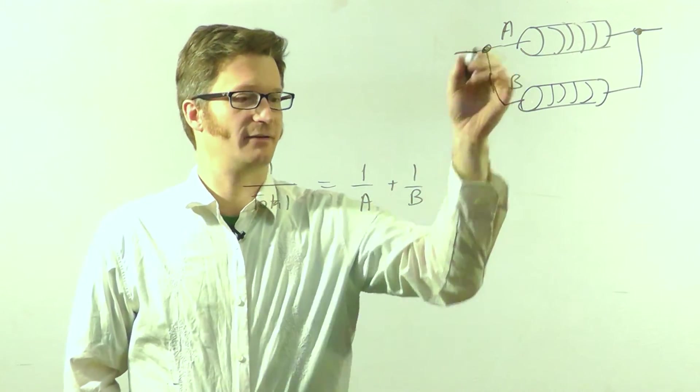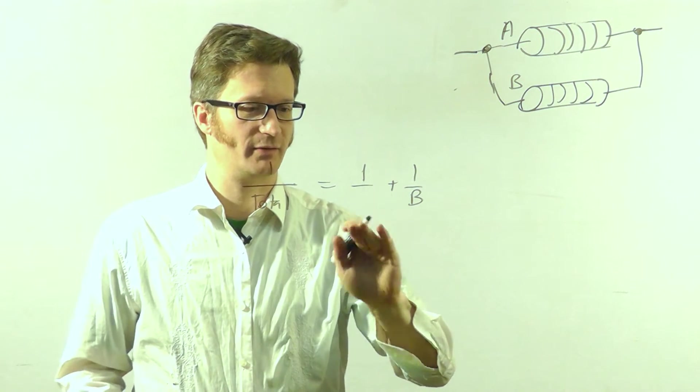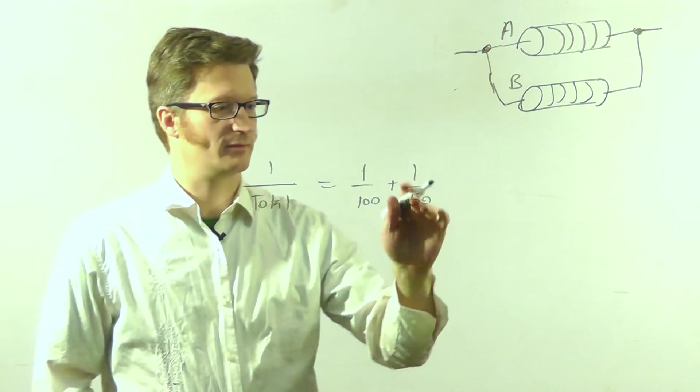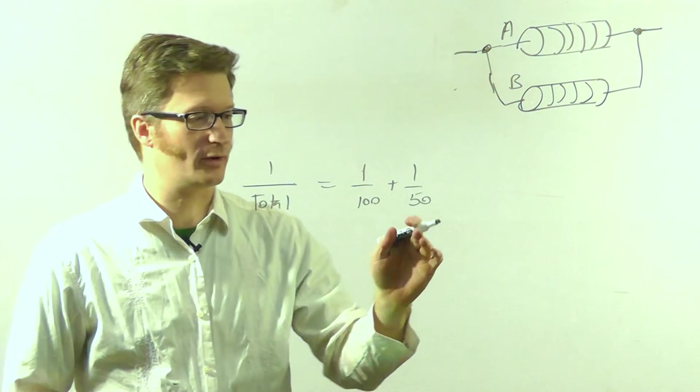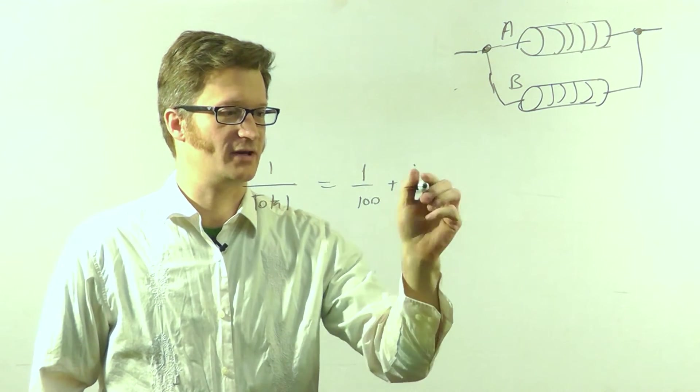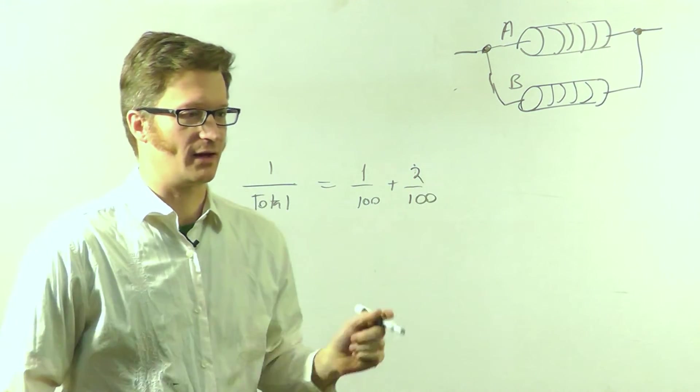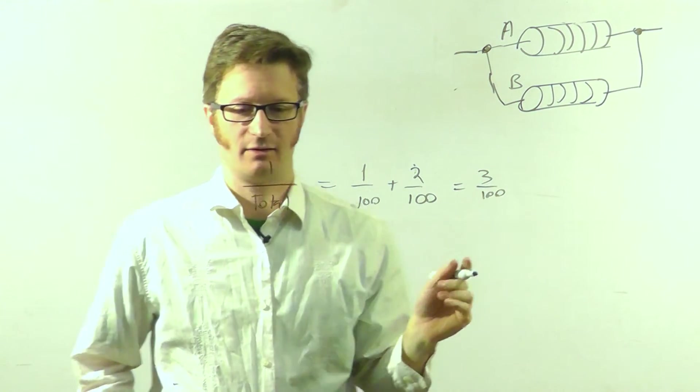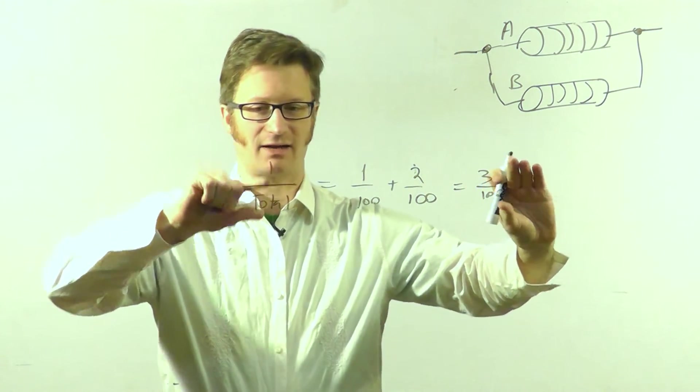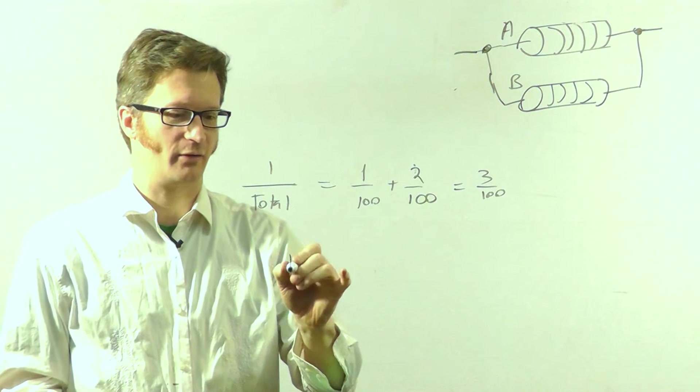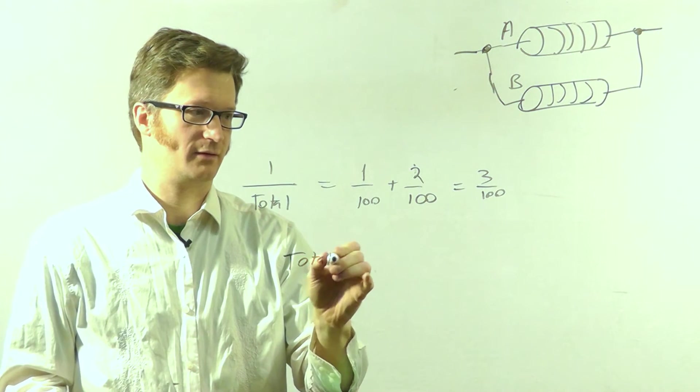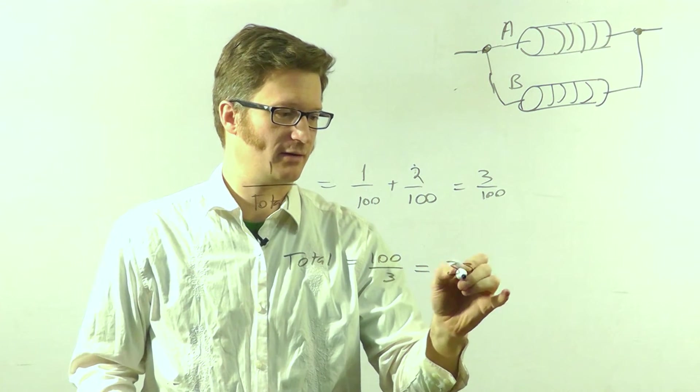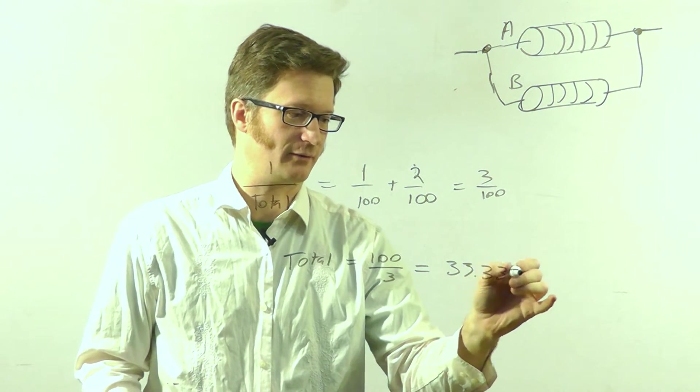And so if A was 100 ohms and B was 50 ohms, 1 fiftieth is also 2 one-hundredths. So we'll just change that. 1 plus 2 equals 3. But now we need to flip it because we need the actual total. So we flip them over. So total equals 100 thirds, or 33.333 ohms.